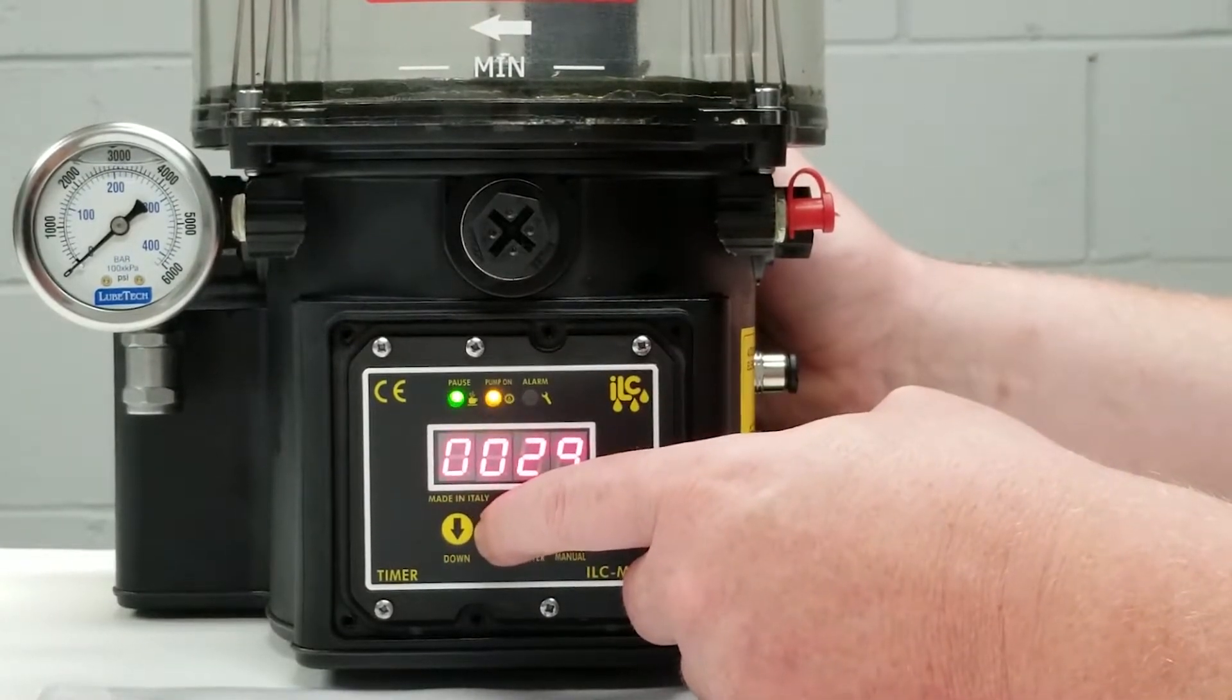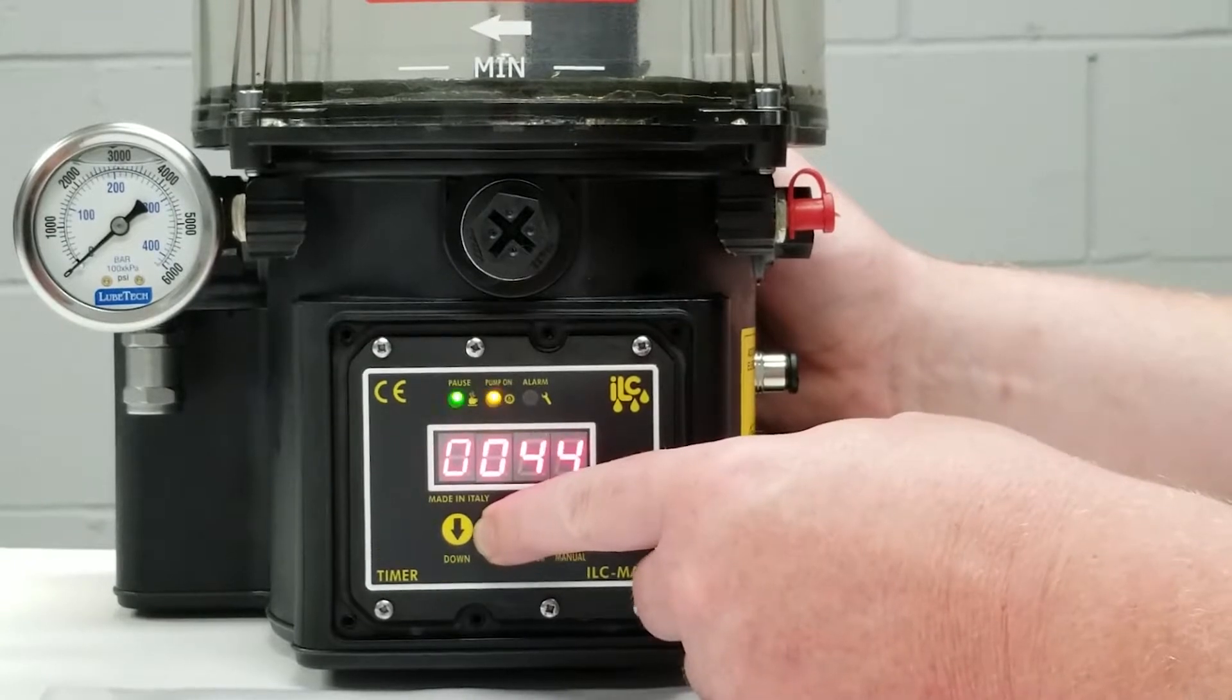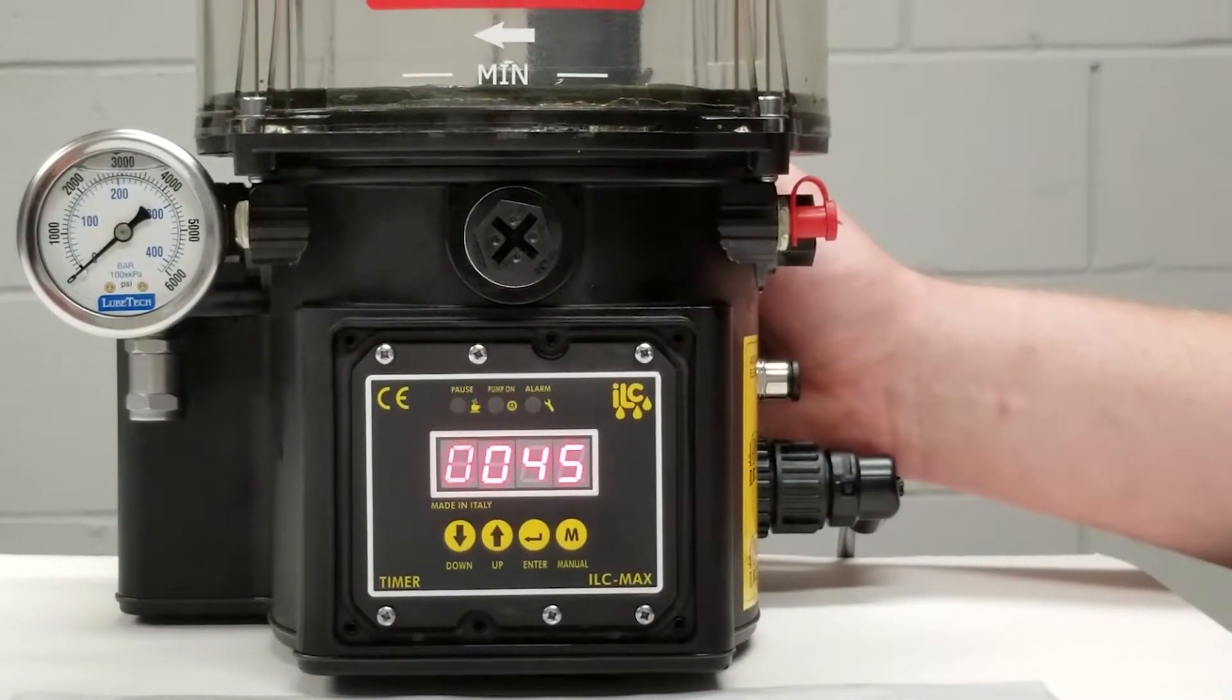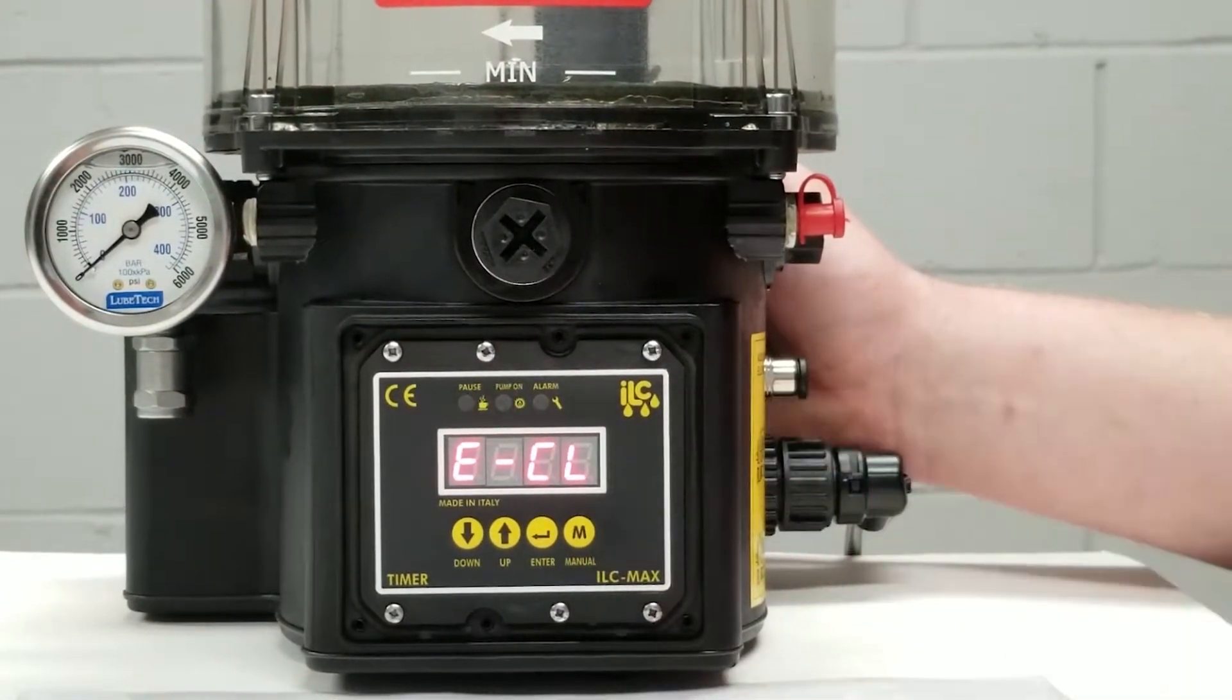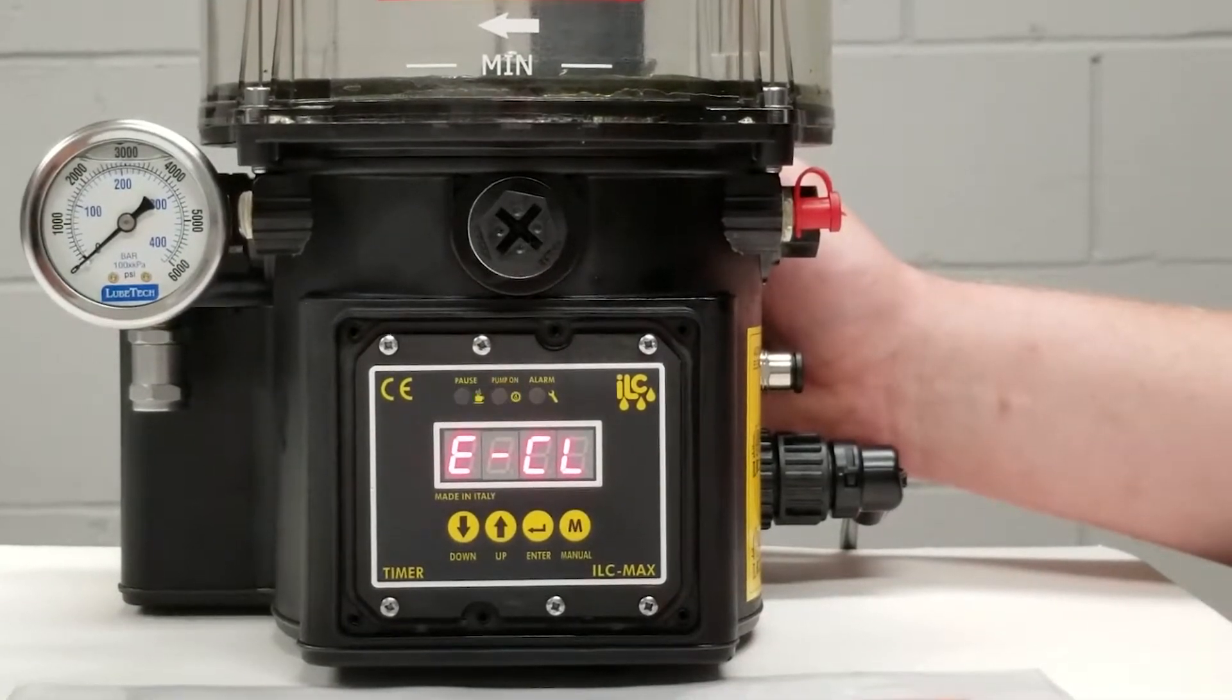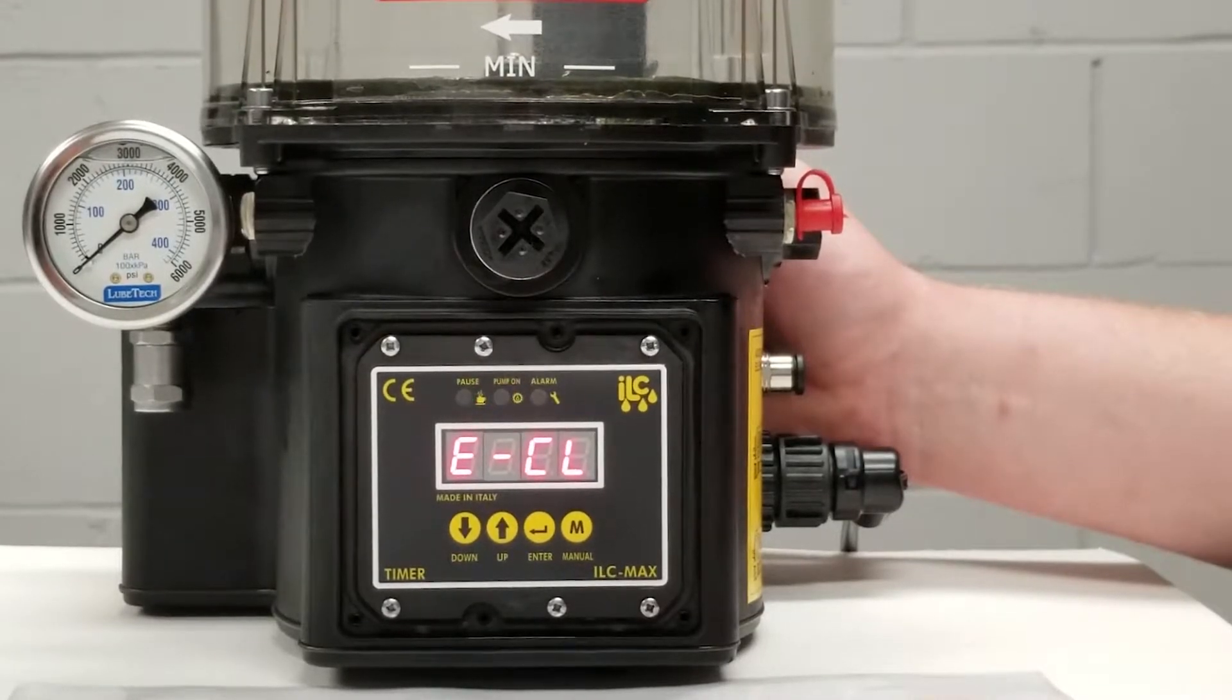So we're going to change this from 18 rotations. Let's just say we want to change it to 45. We'll program in 45 rotation counts and to exit this again we'll press the M button.